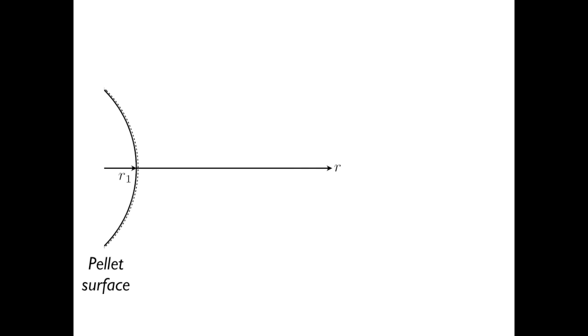If we draw a graphic of our system, the solid curved line is the surface of the particle and the dotted line indicates the blanket of pure carbon dioxide. R1 is the radius of our particle.